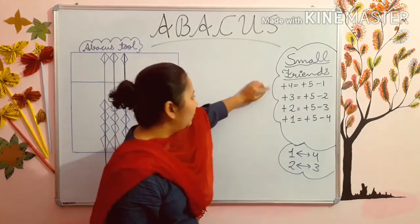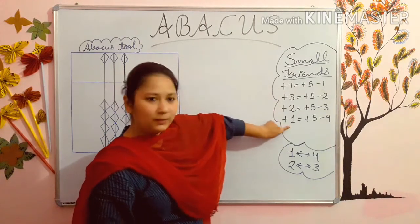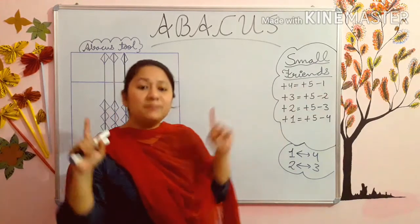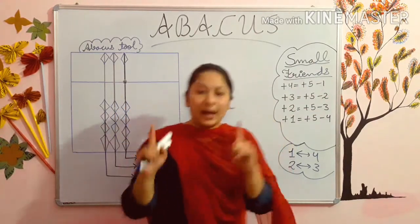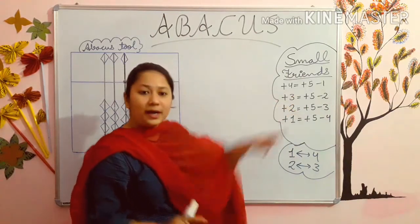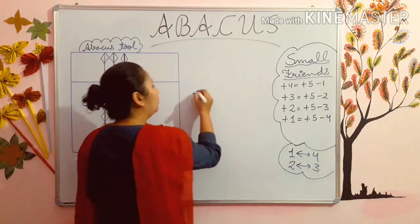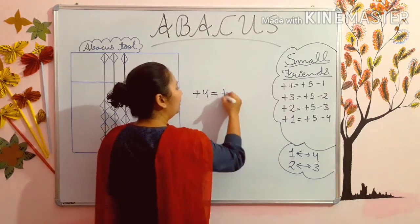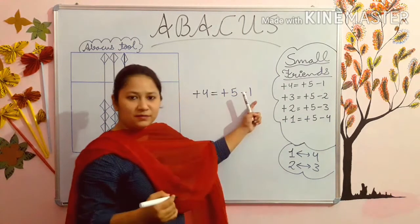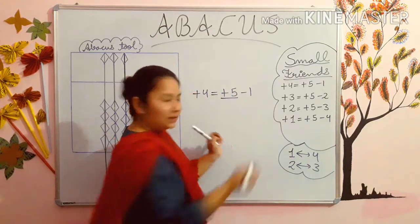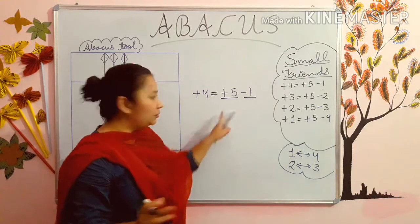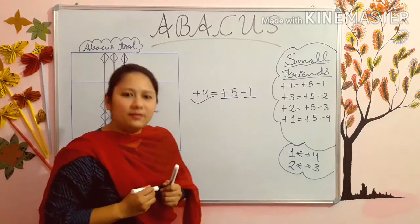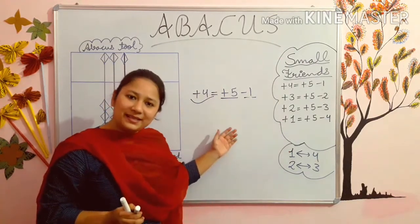Last time I told you about plus 4, plus 3, plus 2, plus 1. The plus 4 formula is plus 5 minus 1. This means that whenever you have to add plus 4 and the bead is not there — there is a lack of bead — you will use the formula plus 5 minus 1. Plus 5 minus 1 means first of all you will add 5, then you will minus 1, and if you do this your 4 will be added. You will get it more when I apply these formulas in today's sum.